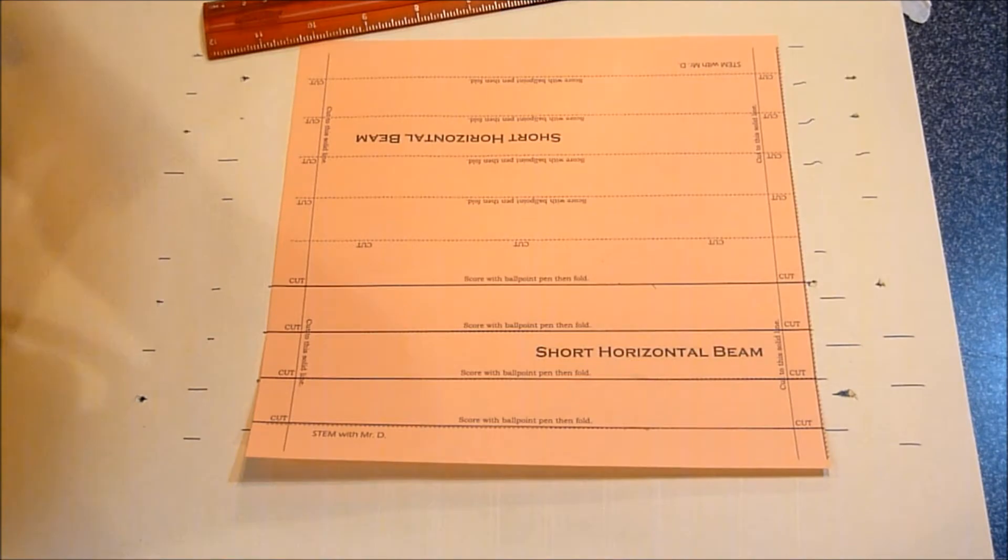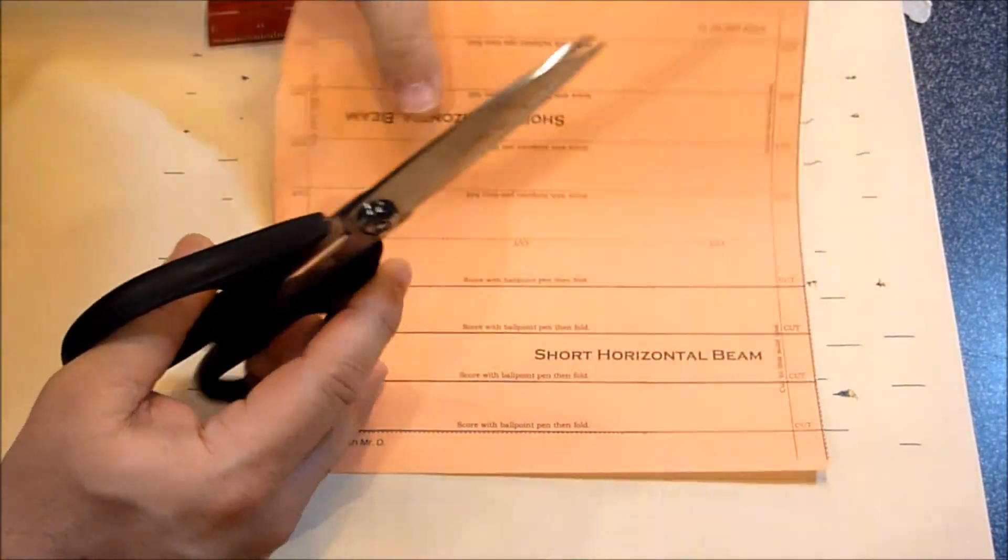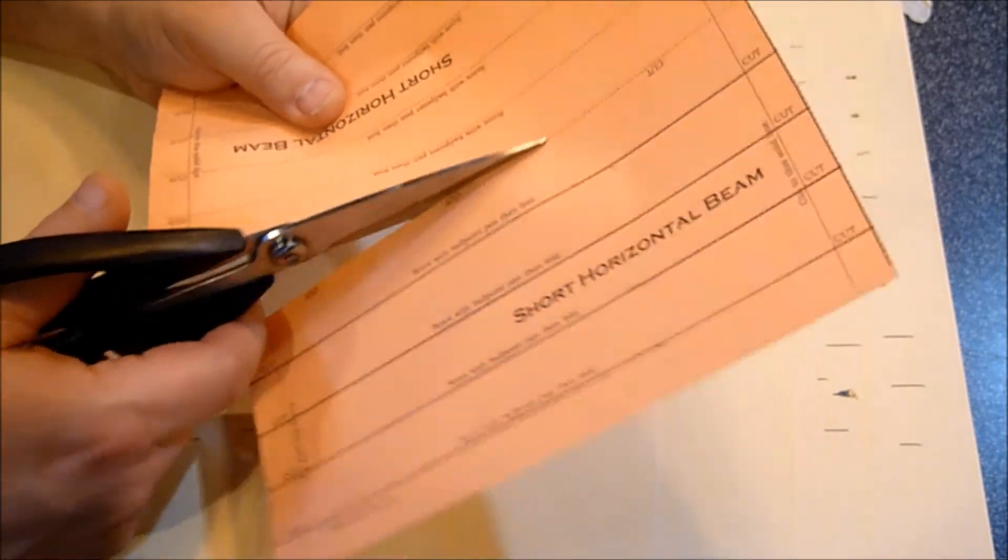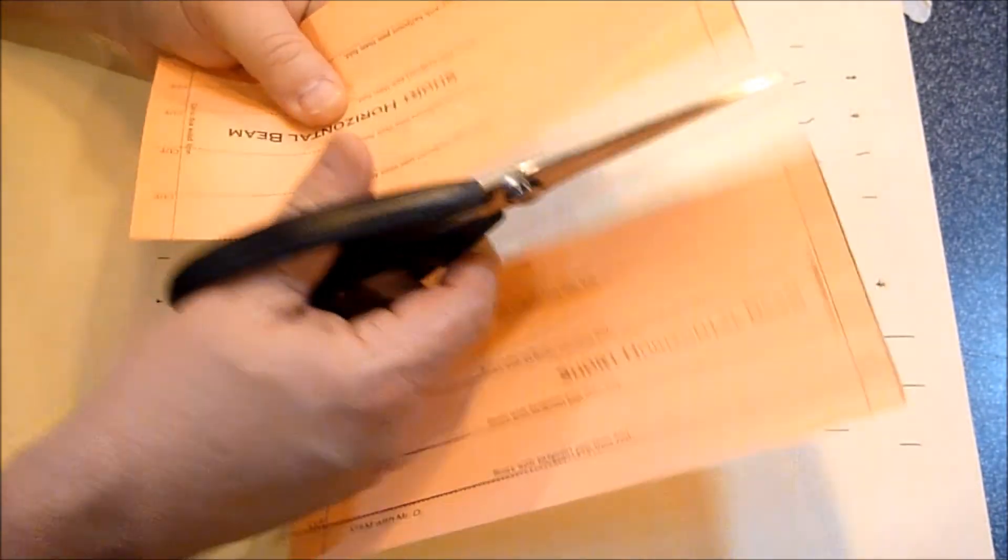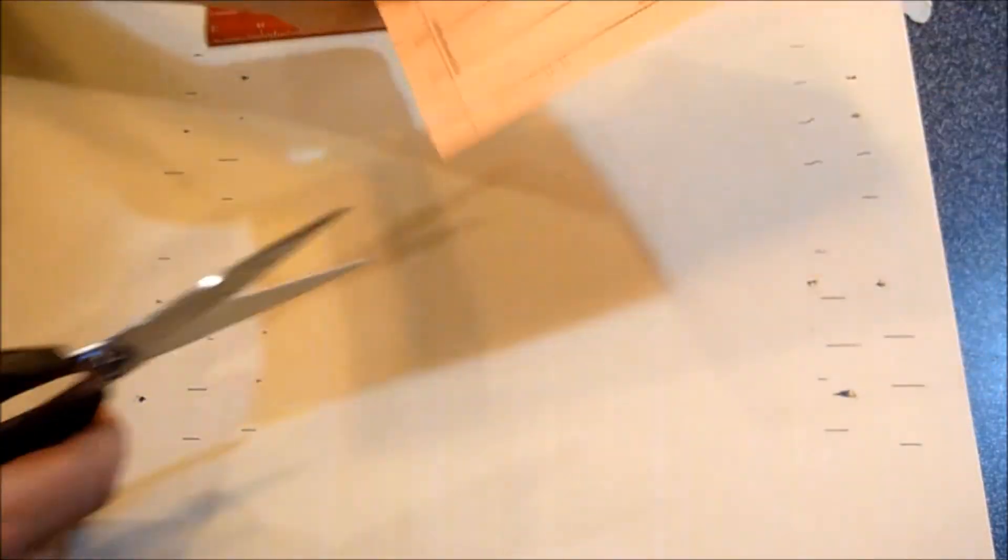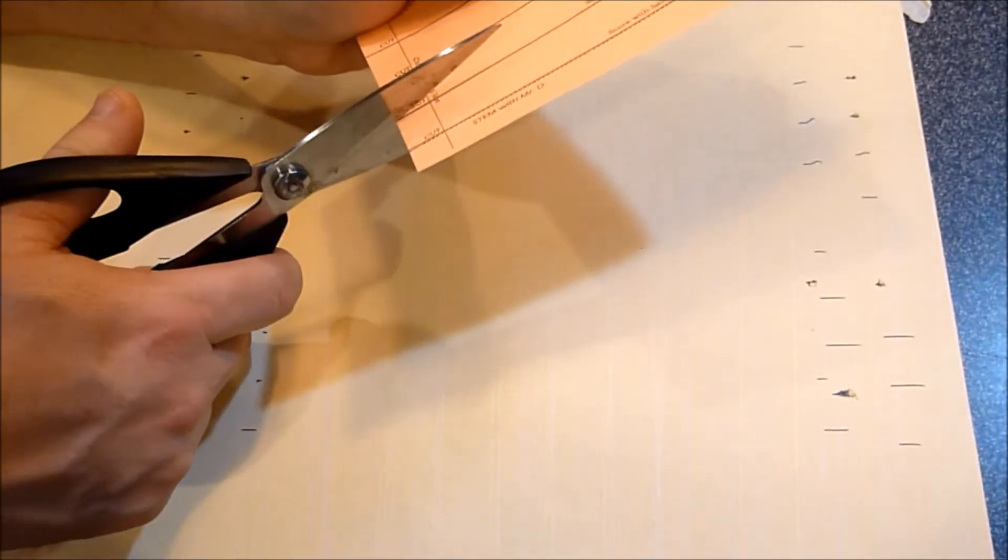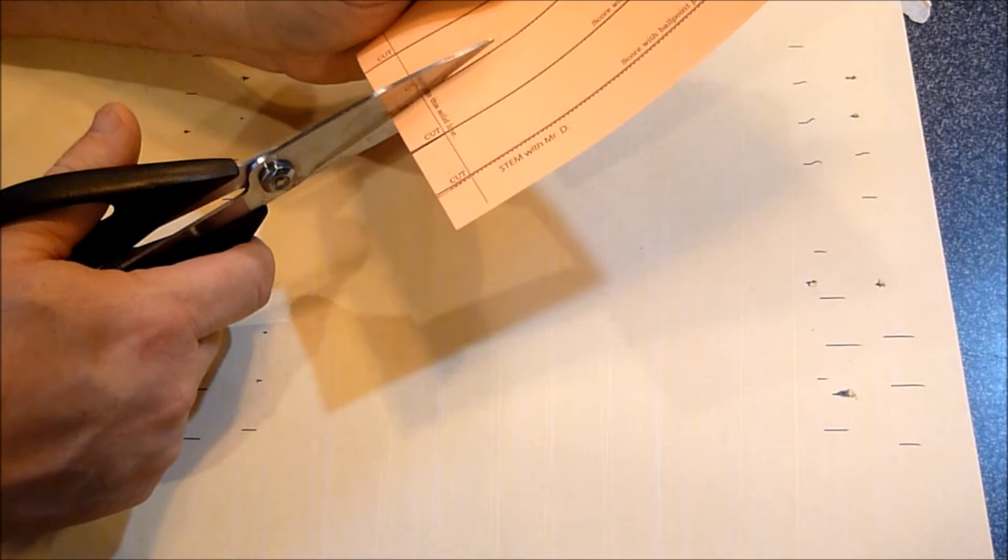And then I'm going to cut out the beam and just cut these sides. Remember, you have to cut both sides because this is how the beams connect.